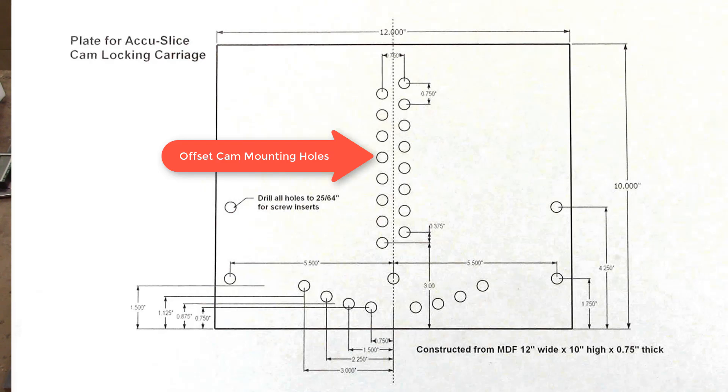For the various mounting positions of the offset cam, I drilled two sets of holes, each three-quarter-inch apart and offset from the center line by three-eighths of an inch. The two sets of holes enable the adjustment of the offset cam in three-eighth-inch increments.